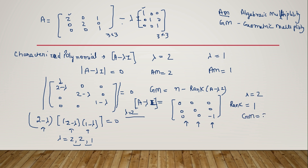The geometric multiplicity for lambda equals two is: order minus rank, which is three minus one equals two. So geometric multiplicity equals two, and algebraic multiplicity also equals two — they are the same. This means the matrix is diagonalizable at lambda equals two.